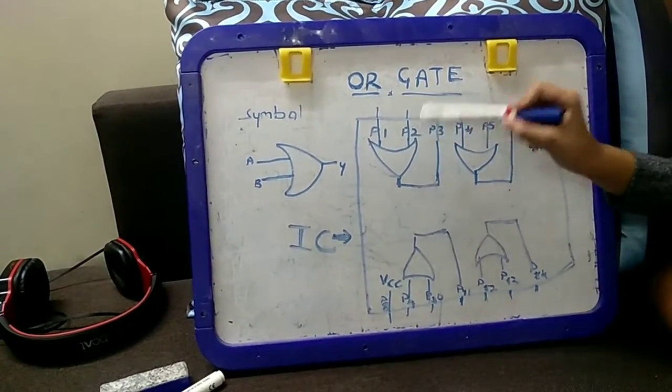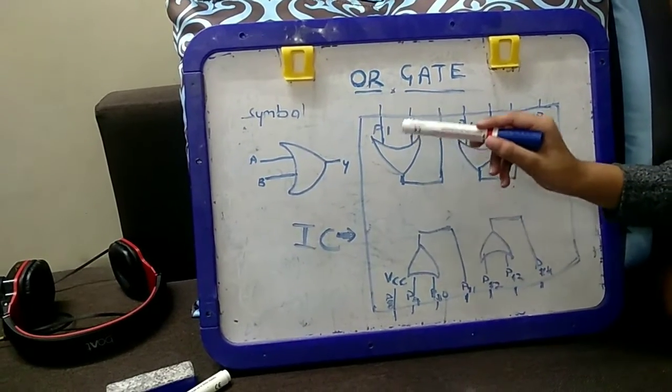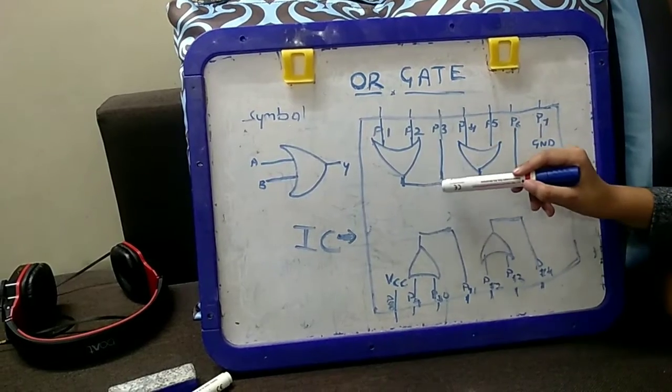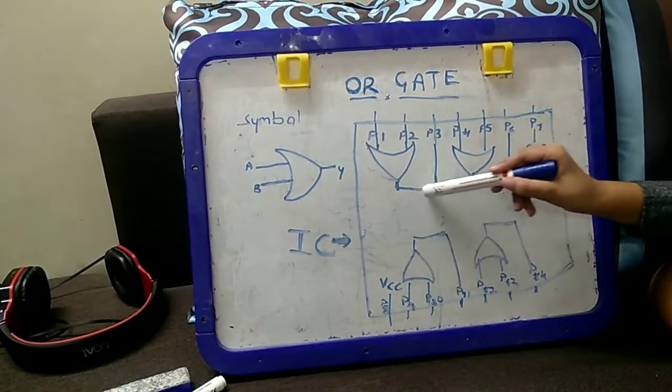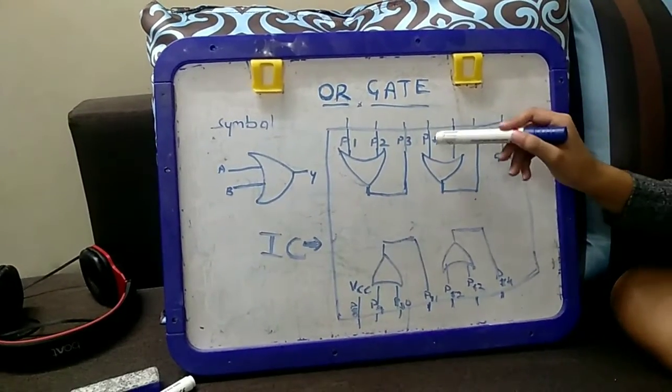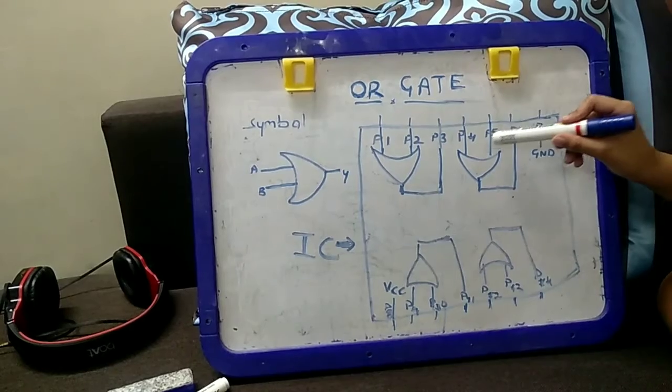Pin 1 and pin 2 are connected to first OR gate's input A and input B, and first OR gate output is connected to pin 3. Second logic gate's input A and B are connected to pin 4 and pin 5.